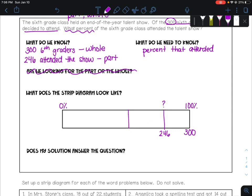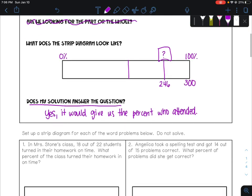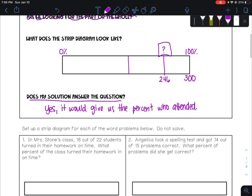...I would actually not use this diagram, and I would decide instead to use a proportion. But we can answer our final question here. Would our solution answer the question? And we know that it would, because it's a percent, and our question is asking for a percent. So yes, it would give us the percent who attended. But again, we're not going to solve it, because I don't think this is the best method to do it. And we were just practicing to look at a strip diagram with the percent as the missing information.